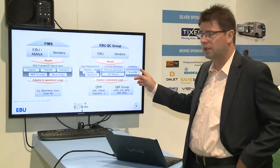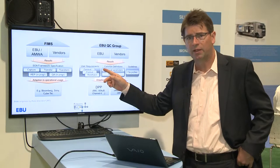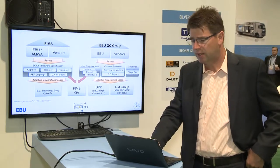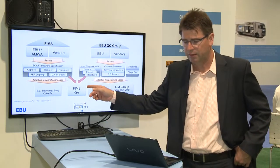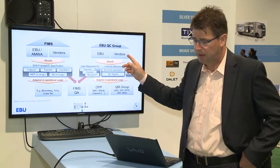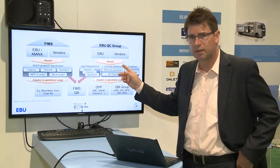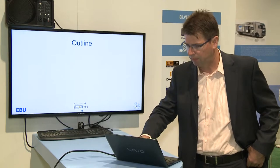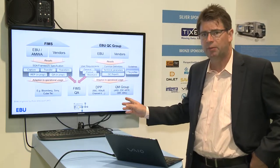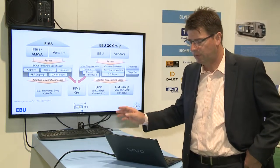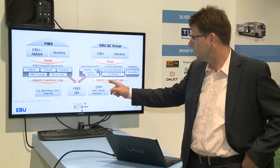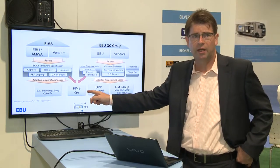This picture shows the cooperation between AMWA and EBU. The AMWA defines the FIMS interface specification. The EBU specifies the user requirements, the format, technical parameters, how the QC reports have to look, and file profiles. All this together comes to the FIMS QA quality assessment.